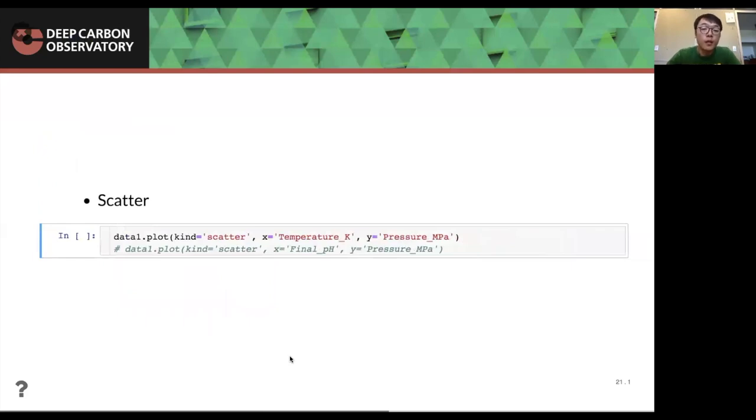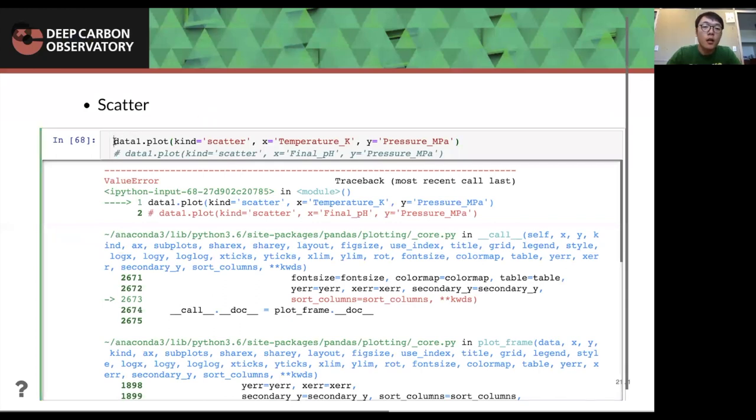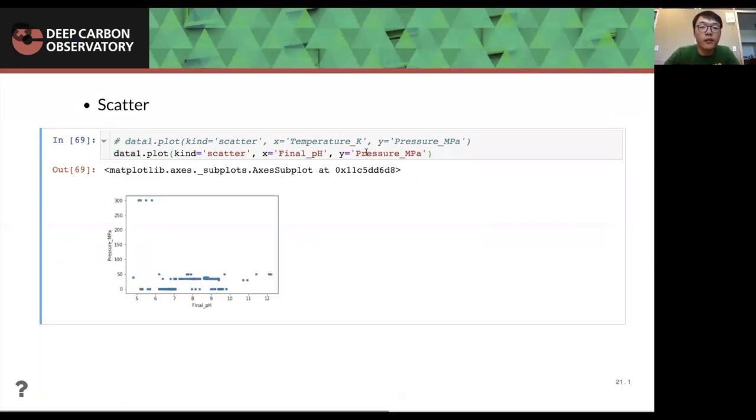And also we can use a function called a scatter. Again, as I showed before, the temperature column has something wrong with it. If we want to plot a scatter X equal to temperature, Y equal to pressure, it will give us some error message. So before dealing with this problem, I will show you the scatter plot, use another thing like final pH and the pressure. You will see that we simply using this simple line, we plotted the X as final pH, Y as pressure and the distribution looks like this. Seems like we are missing a lot of pressure in between.